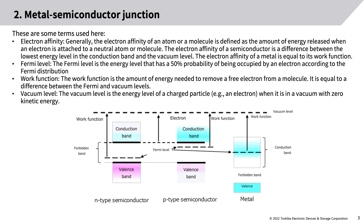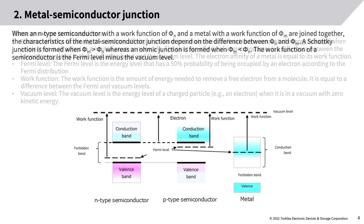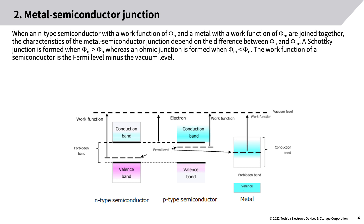The work function is equal to the difference between the Fermi and vacuum levels. Vacuum level: The vacuum level is the energy level of a charged particle, e.g., an electron, when it is in a vacuum with zero kinetic energy.